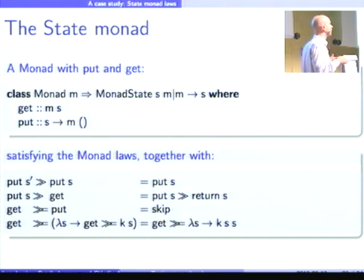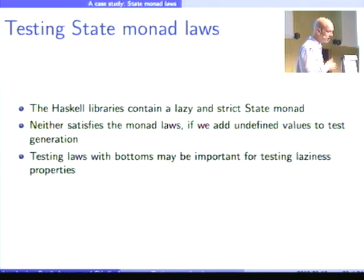So, you want to see if the state monad implementations satisfy these laws. So, the Haskell libraries contain both lazy and a strict version of the state monad. So, laziness is apparently an issue. So, what we did is we extended our framework to also test for undefined values. So, the test cases that are generated contain undefined values. And if you do that and you test the monad laws for the state monad, it turns out that none of the state monad implementations satisfies these laws.